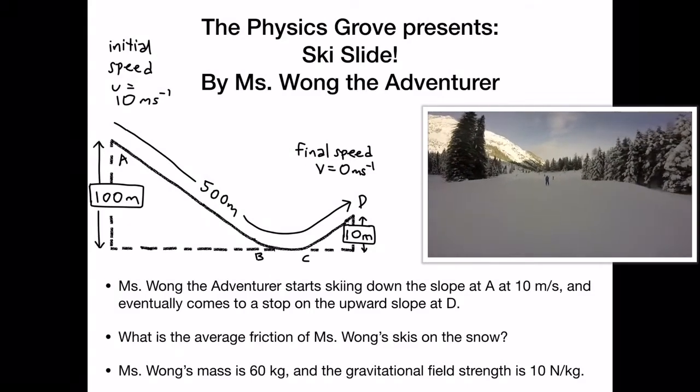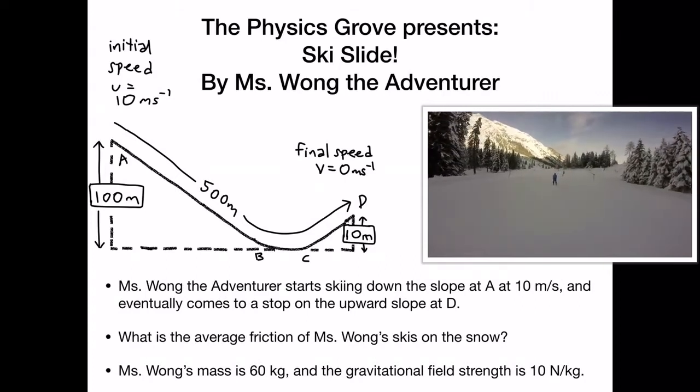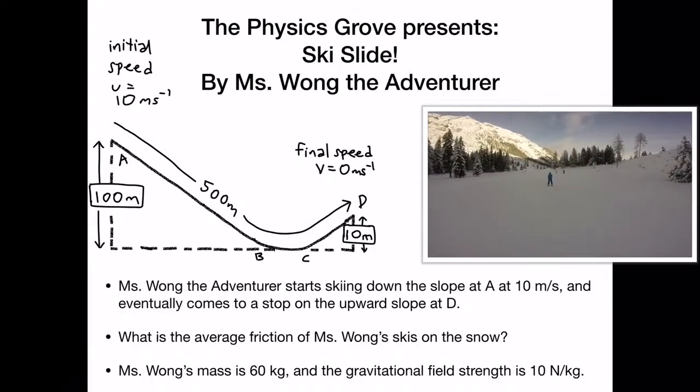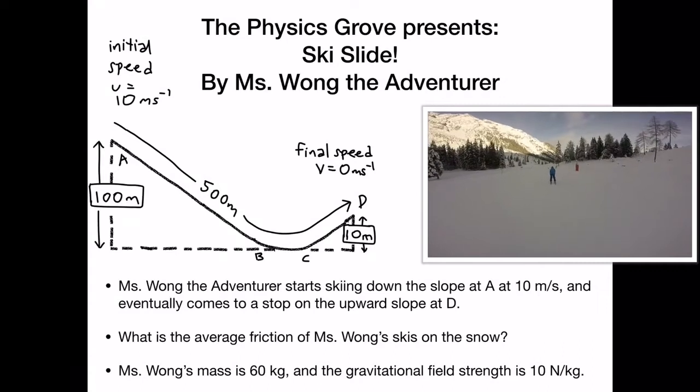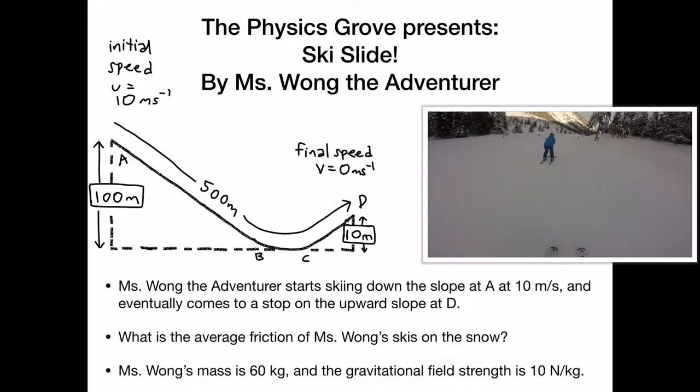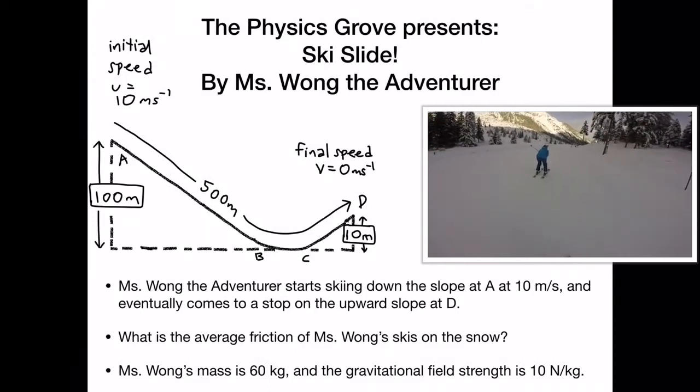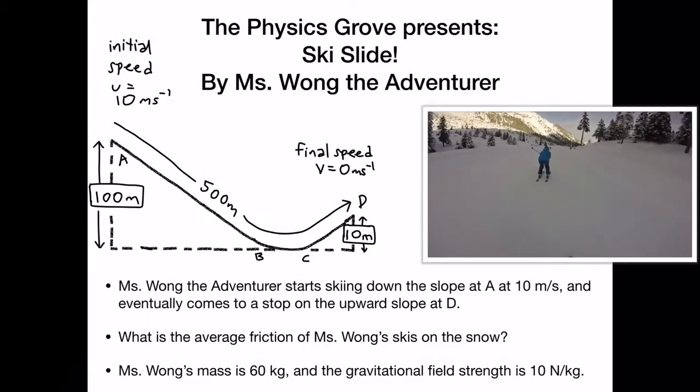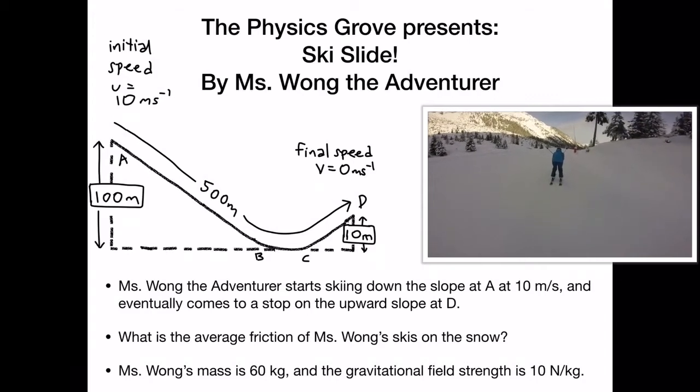You can see how she goes down towards the flat part and then she goes upwards again because of conservation of energy. So what is the average friction of Miss Wong's skis on the snow? Miss Wong's mass is 60 kg and the gravitational field strength is 10 newtons per kg.